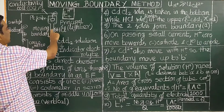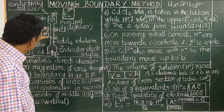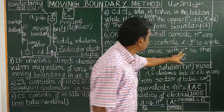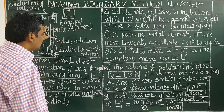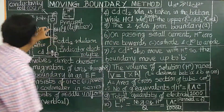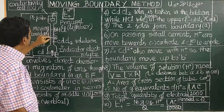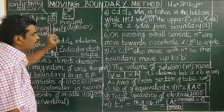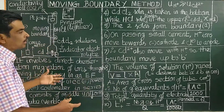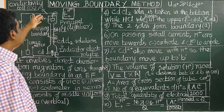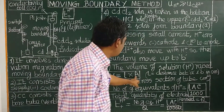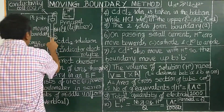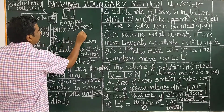Upon displacement of the boundary, the cadmium also moves along with it. The boundary moves up from A to B. The volume of solution that migrated and was transported is given by V equal to length multiplied by the area of cross-section of the bore tube — that is, the distance between A and B multiplied by the cross-sectional area of the tube.